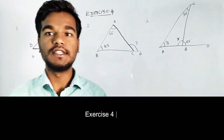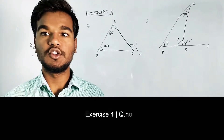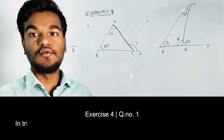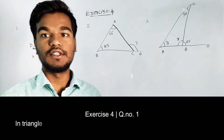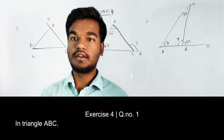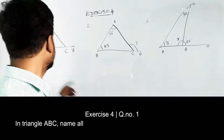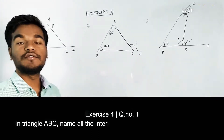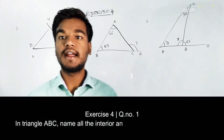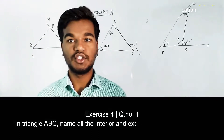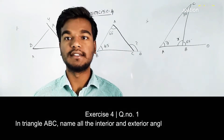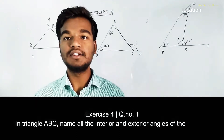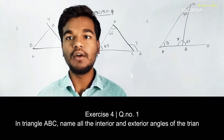In this module we are going to discuss the solutions for the exercise, first question. Given triangle ABC, we need to find what are the interior angles and what are the exterior angles. Exterior angles are the angles which are present outside the triangle.